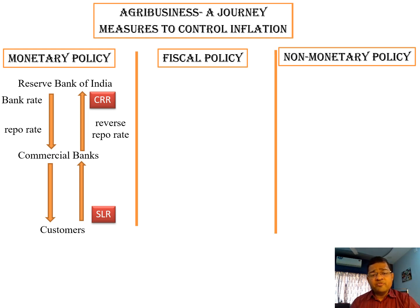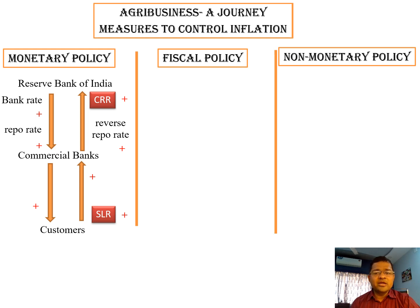At the time of inflation, the Reserve Bank of India increases the bank rate, repo rate, and reverse repo rate, and simultaneously CRR and SLR, by which the overall interest rate for the customer is increased. If the overall interest rate for the customer is increased, then customers will like to take less money from the commercialized bank and deposit more money with the bank, by which the money flow into the market is checked and ultimately inflation is controlled.